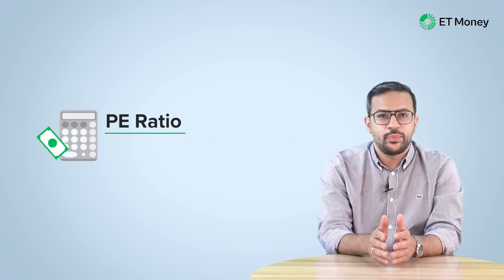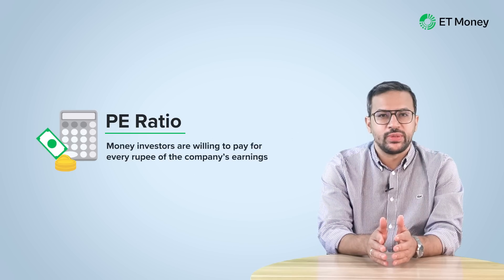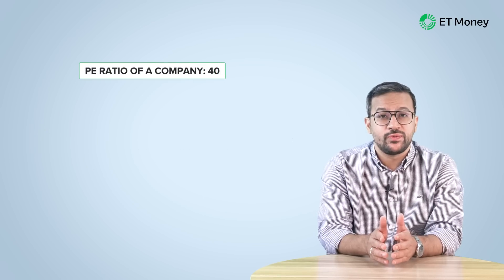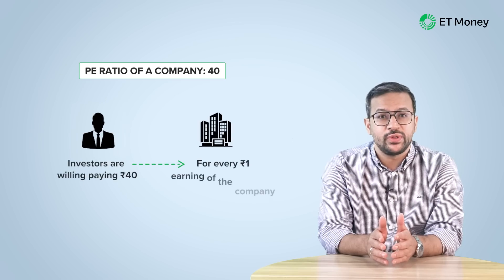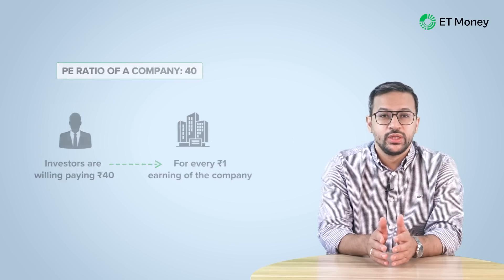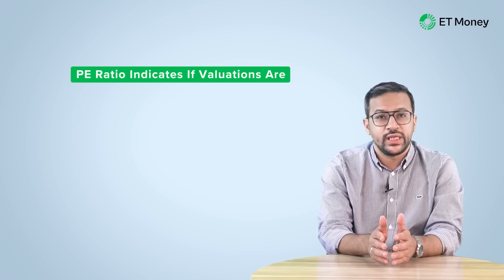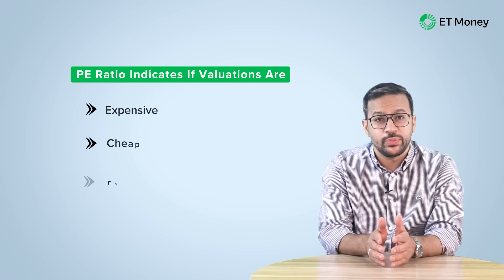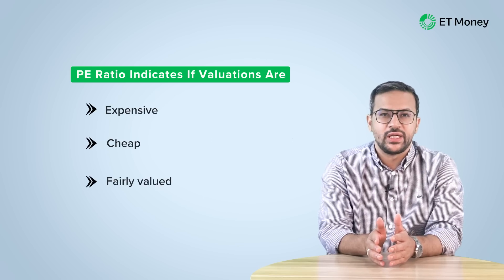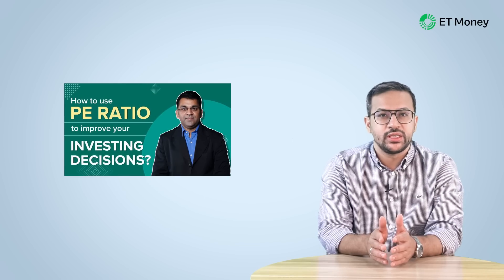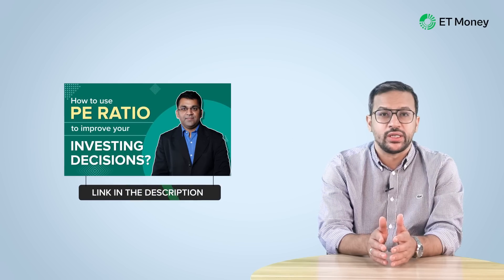The PE Ratio is a popular valuation metric. It tells you how much money investors are willing to pay for every rupee of the company's earnings. So if a company's PE Ratio is 40, it means investors are willing to pay 40 for every rupee the company earns. It indicates whether the stock or an index is expensive, cheap or fairly valued.